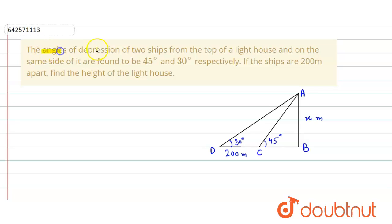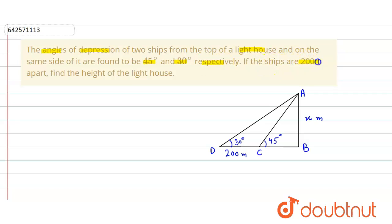In the given question, the angles of depression of two ships from the top of a lighthouse on the same side of it are found to be 45 degrees and 30 degrees respectively. If the ships are 200 meters apart, then we have to find the height of the lighthouse.